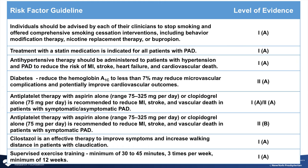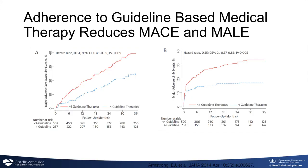The guideline-directed risk factor modification treatments are almost identical to the guidelines for treatment and prevention of coronary artery disease. Both the American Diabetes Association and the American Heart Association have adapted their guidelines to be coincident. Patients taking guideline-directed medical therapy have a much lower risk of major cardiac or limb events than those who are not — following the guidelines and treating all risk factors will save lives and limbs.